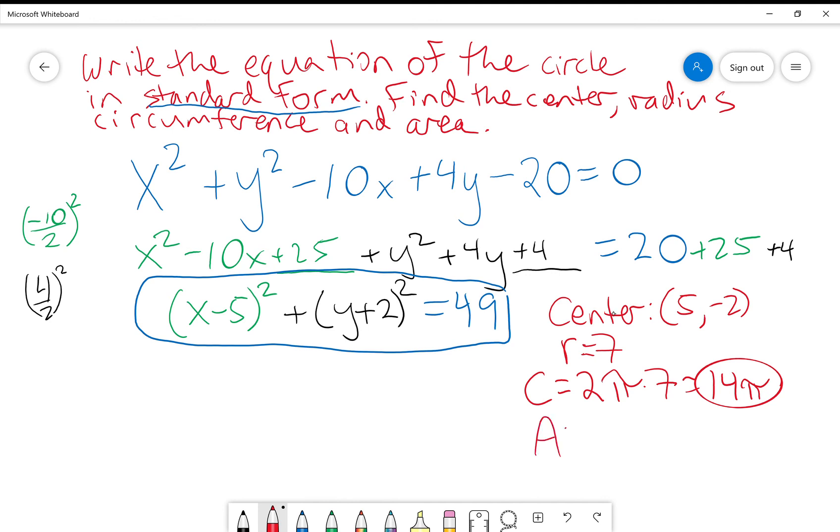And then my area is equal to, well, pi r squared, so pi times 7 squared is equal to 49 pi, and I can leave that as well. When we leave it in terms of pi, in terms of pi.